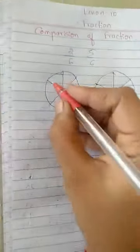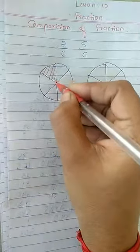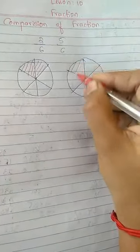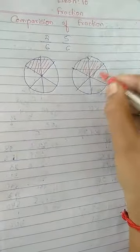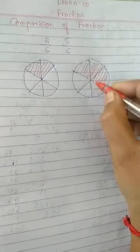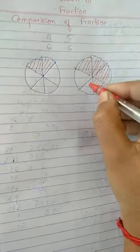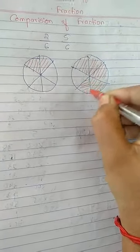Now you see, 2 by 6 they have told. So in the first figure I am going to consider only 2 shaded portions. In the second figure I am going to take how many? 5 they have told. Numerator is representing that number of shaded portions. So I am going to take 5 parts.